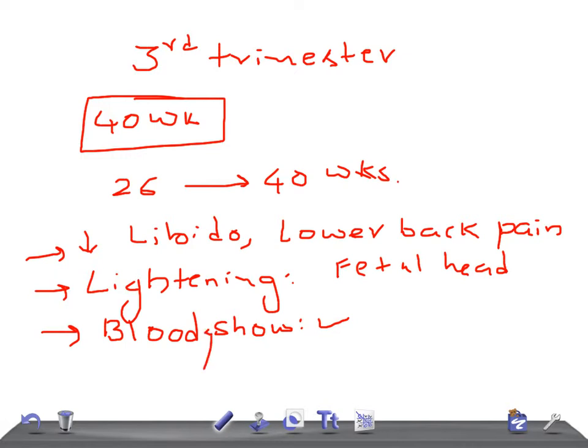What's the weight gain during the third trimester? One pound per week after 20 weeks. Same as what we described in the second trimester - one pound per week after 20 weeks.